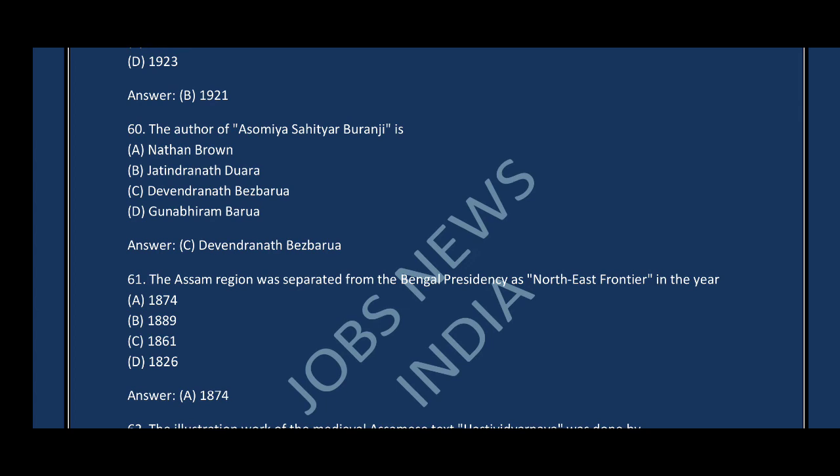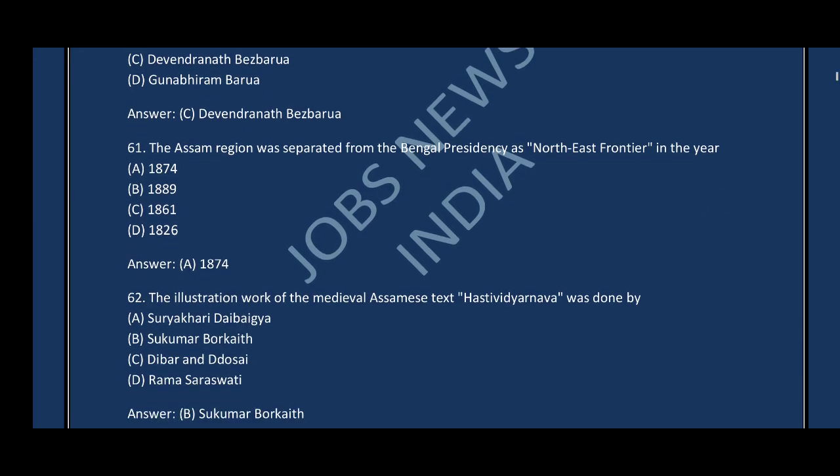Question number sixty: The author of Asamiya Sahityar Buranji is — the correct answer is option C, Devendra Nath Bezbarua. Question number sixty-one: The Assam region was separated from the Bengal Presidency as North East Frontier in the year — the correct answer is option A, 1874.